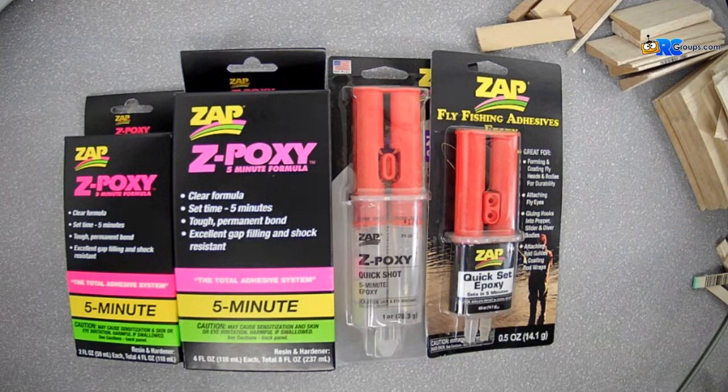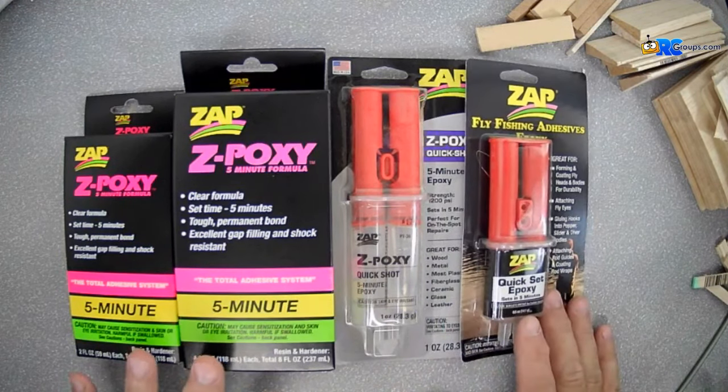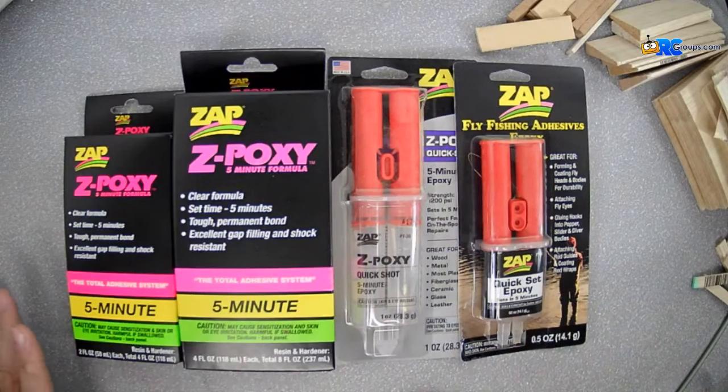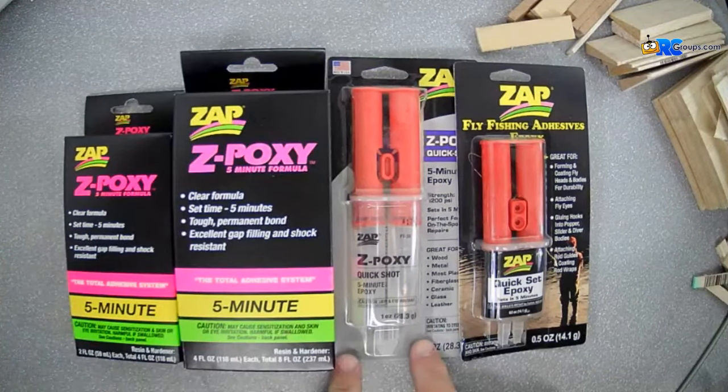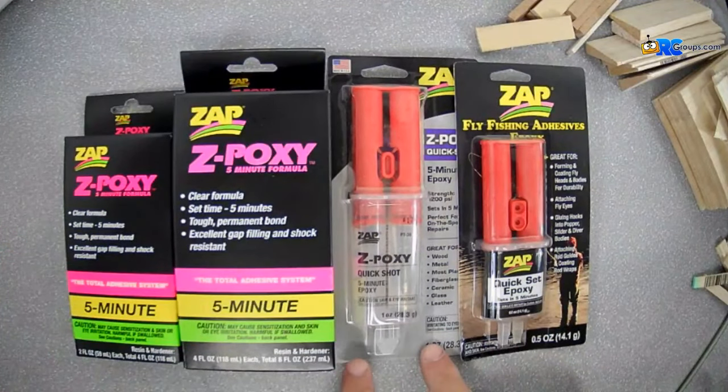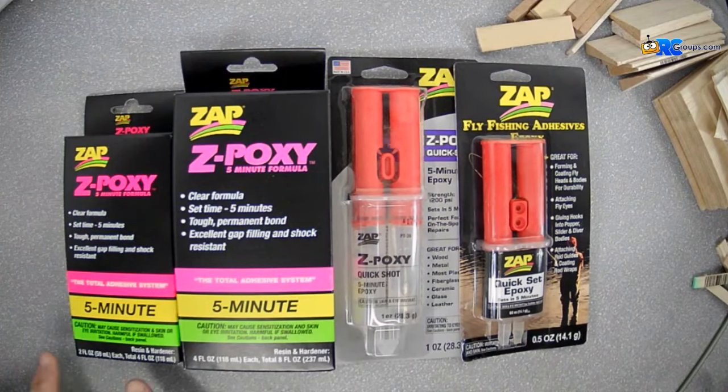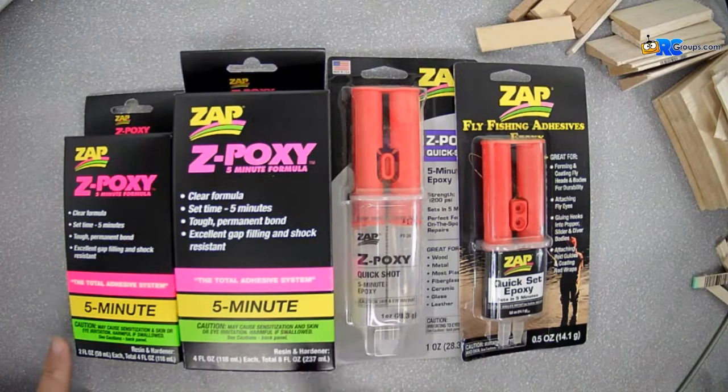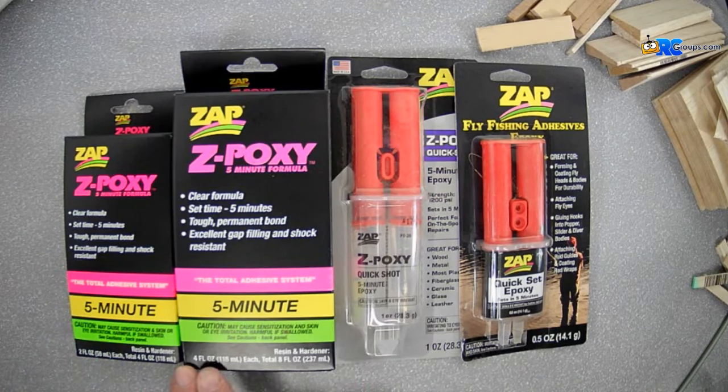Yeah, Jim, we've got four different offerings for the ZAP 5-Minute Epoxy. We offer it in a 4-ounce set, an 8-ounce set, a 1-ounce syringe, and a half-ounce syringe. So when I talk about a set, this 4-ounce set, you get 2 ounces of resin and 2 ounces of hardener. For the 8-ounce set, you get 4 ounces of resin and 4 ounces of hardener.